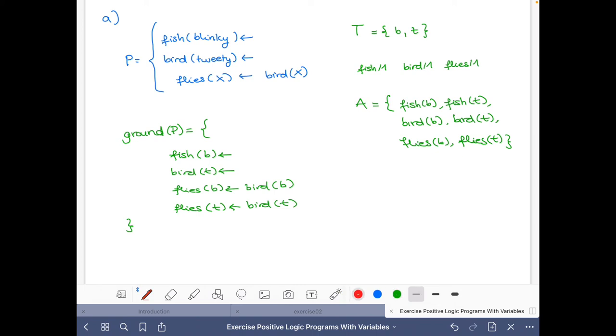So here we have fish(blinky), bird(tweety), and if we have bird(tweety), we can also derive flies(tweety), and there's nothing else that we can derive. Hence, these three atoms are the atoms that belong to the stable model, because there's no way that we can derive bird(blinky) and therefore no way we can derive flies(blinky).